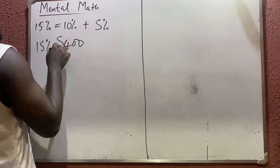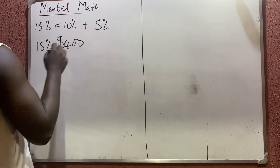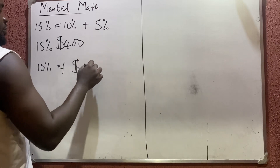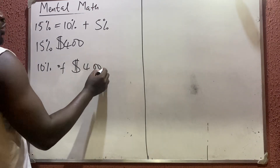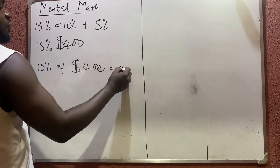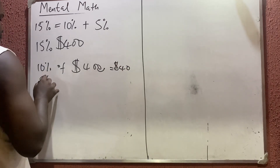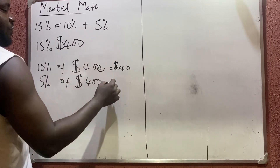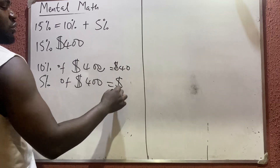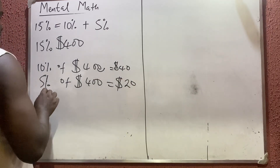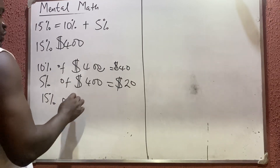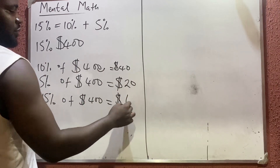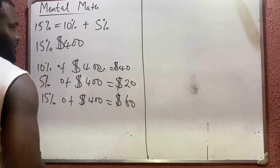So if they say 15 percent of 400 dollars, first get 10 percent of 400 dollars — put the decimal point here and move one — which gives you 40 dollars. Then 5 percent of 400 dollars is half of that answer, which is 20 dollars. So 15 percent of 400 dollars is 40 plus 20, which equals 60 dollars.